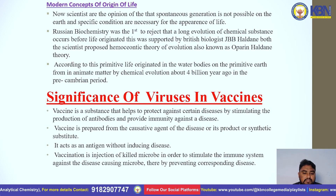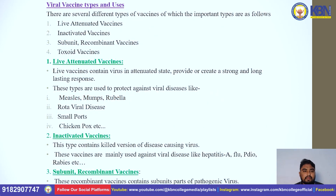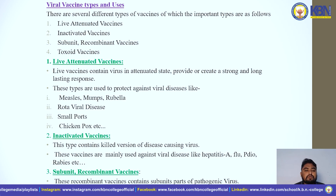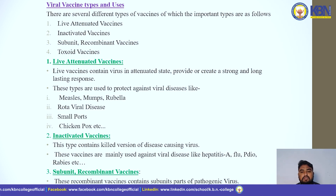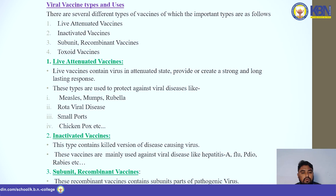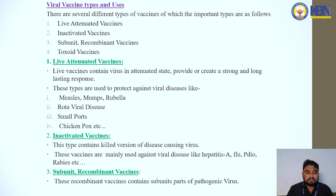A vaccine is the injection of killed microbes in order to stimulate the immune system against disease-causing microbes, thereby preventing the corresponding disease. There are several different types of vaccines. The important types are: live attenuated vaccine, inactivated vaccine, subunit and recombinant vaccine, and toxoid vaccines. Live attenuated vaccines contain the virus in an attenuated state and provide a strong and long-lasting immune response. They are used to protect against viral diseases like MMR, rotavirus, smallpox, and chickenpox.